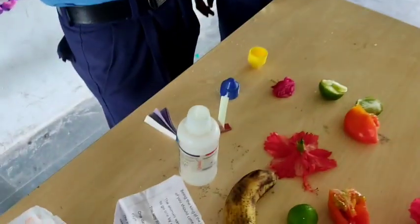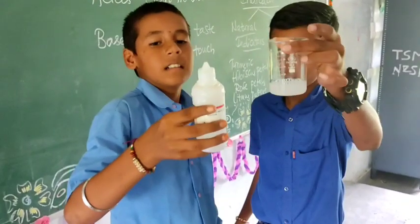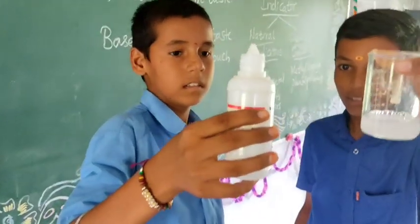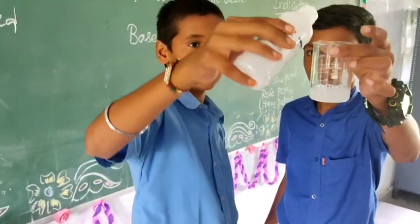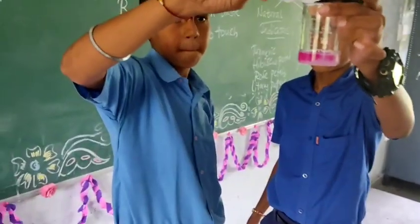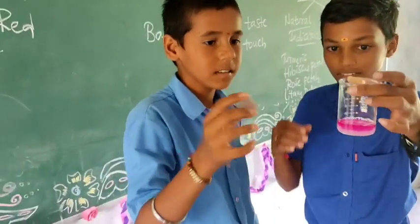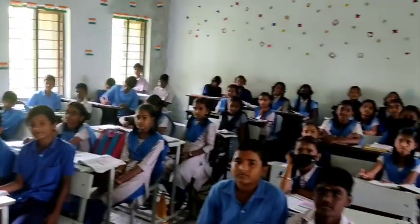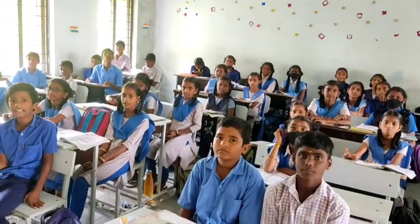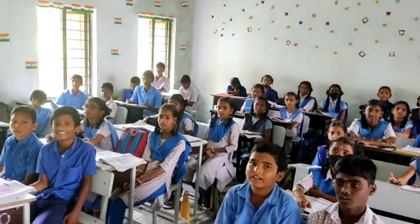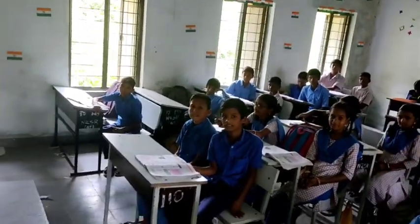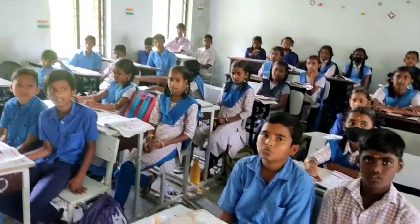Next, we test the Soap Solution with Phenolphthalein. We take the Soap Solution again in the beaker and add a few drops of Phenolphthalein indicator. The Soap Solution is changing into pink color with Phenolphthalein. So with Methyl Orange it changed to yellow color, and with Phenolphthalein it is changing into pink color. We can confirm that the Soap Solution is basic in nature.